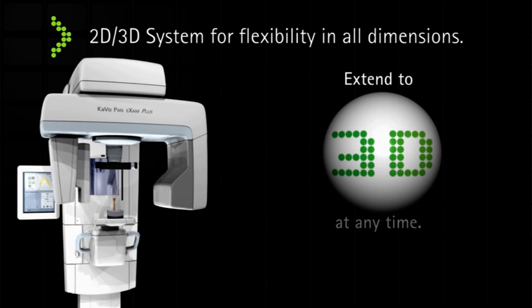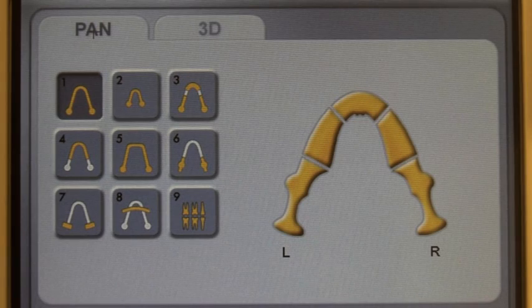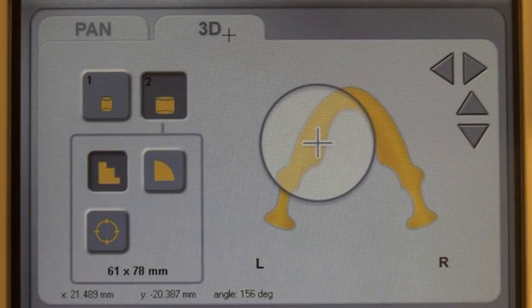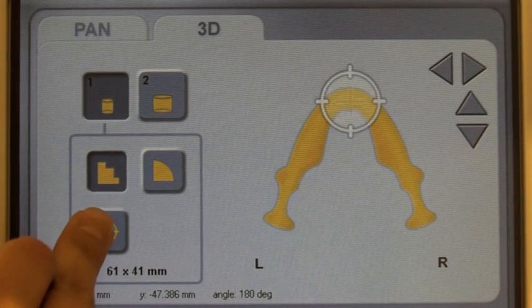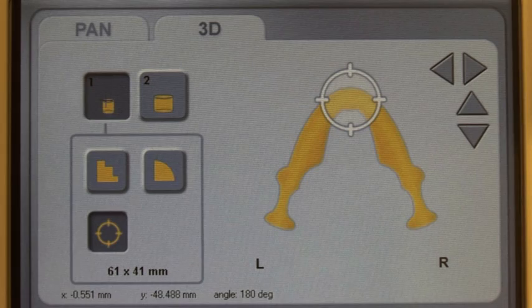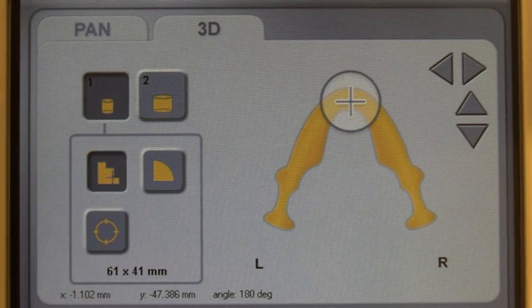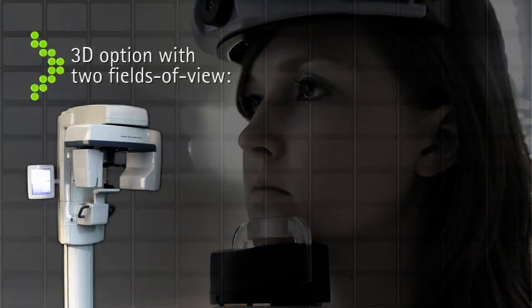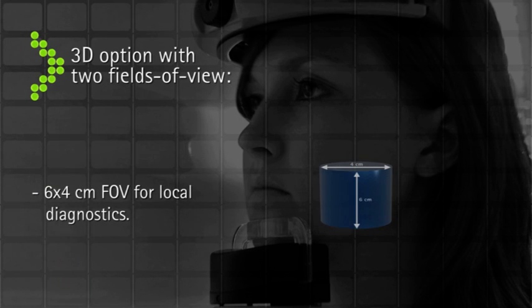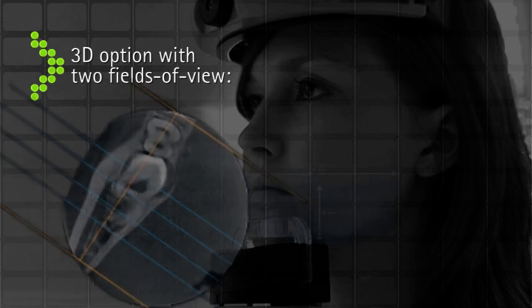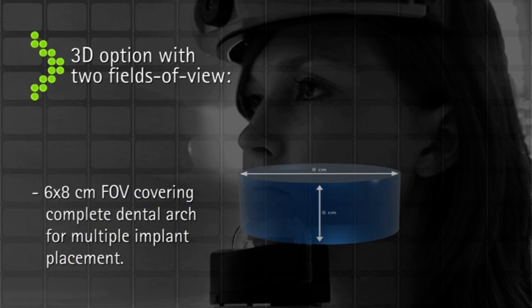The Pan Exam Plus can be switched to 3D at any time and offers an optimum selection for optimum 3D images. Different volume sizes and different resolutions offer the perfect solution for optimum 3D images. The 6x4 volume for local diagnostics and 6x8 volume to display the entire jaw arch.